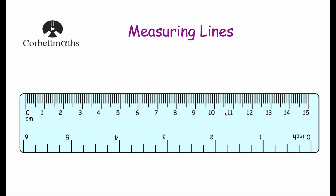Here we've got a 15cm ruler. Typically whenever you get a ruler it's either a 15cm one, which is the slightly smaller one, or the 30cm one, which is twice as big — those would be the typical rulers you'd use. We've got our centimetres on the top and our inches below. You're usually asked to measure the length of a line in centimetres or millimetres — your metric units — which are on the top, so we're going to use that top half of the ruler a lot in this video.